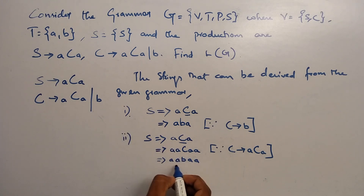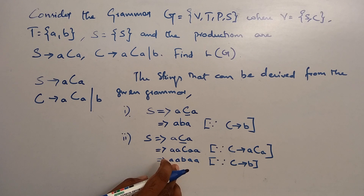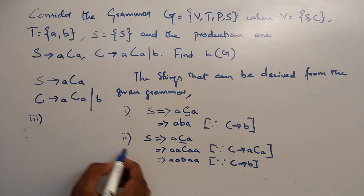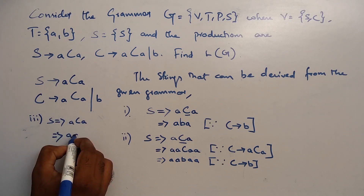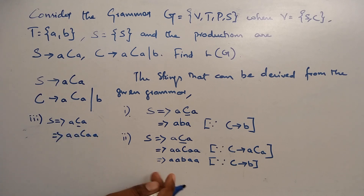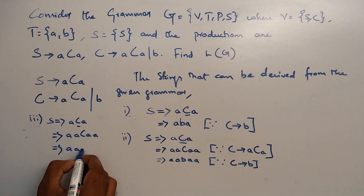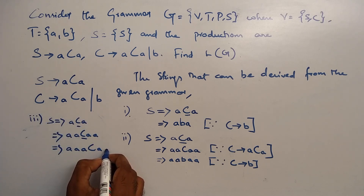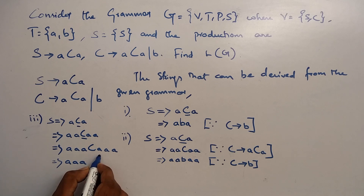If we want to stop at a terminal, C tends to B. So we can write AABAA. For the third string, we write A C A and again replace C with A C A, giving A A C A A. This C can be replaced by A C A again. Then replacing B in this step gives A A A B A A A.